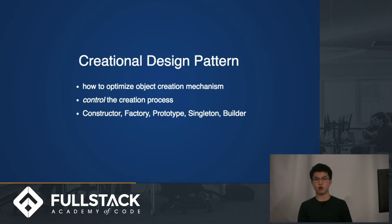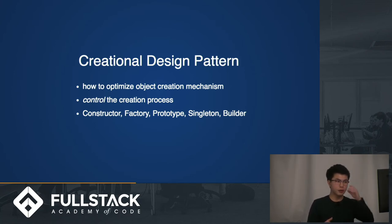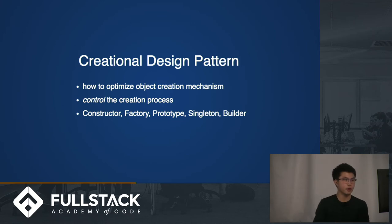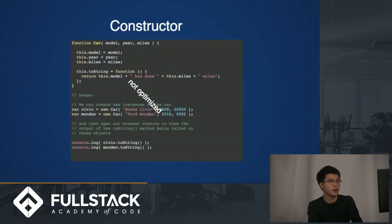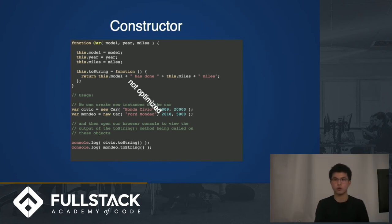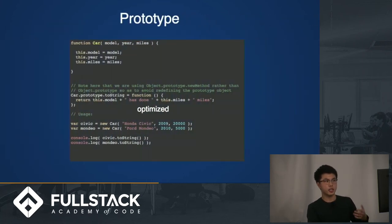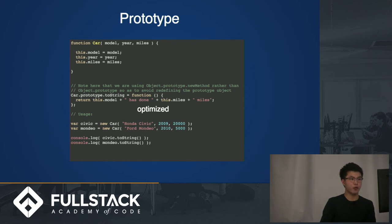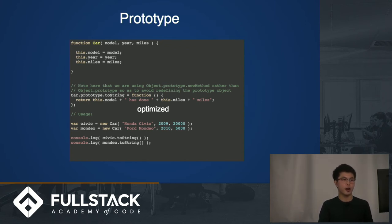Creational design patterns focus on how to best optimize the creation of objects. For example, a constructor function is something we're all really familiar with. But it's not optimized, because whenever we create a new instance for a car constructor, we also copy all the methods inside the constructor, which is not really efficient. The more optimized way is using the prototype design pattern, which we all use every day. Instead of redefining and copying the entire methods inside a constructor, we're actually passing by reference, which improves the performance of our code.